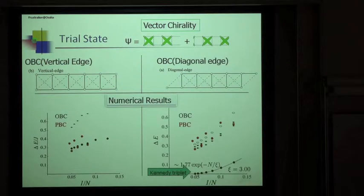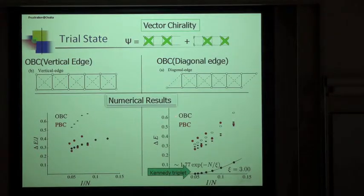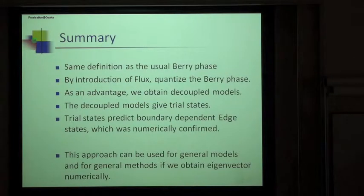Actually, we show the numerical result of the energy gaps. In this case, vertical edge case, there is no Kennedy triplet here. But if the diagonal edge case, the Kennedy triplet appears here. This level is actually three-fold degenerated.